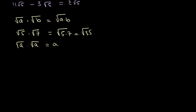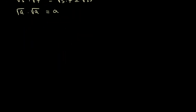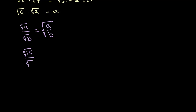We can also divide surds using the rule: the square root of a divided by the square root of b is equal to the square root of a divided by b. For example, the square root of 15 divided by the square root of 3 equals the square root of 15 over 3, which is the square root of 5.